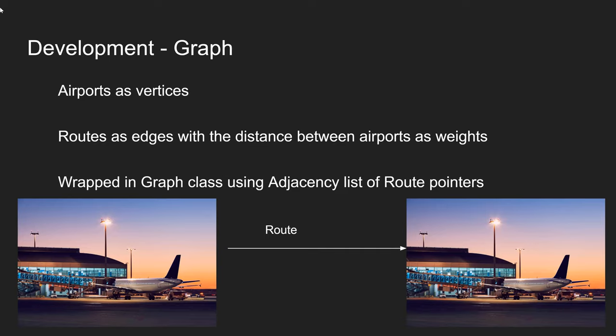We had to use a directed graph in order to store the dataset. It is a directed graph because the routes are one-way flights. In this graph, the nodes are represented as the airports and the edges are the routes. The weight of the edges is the distance of the route.